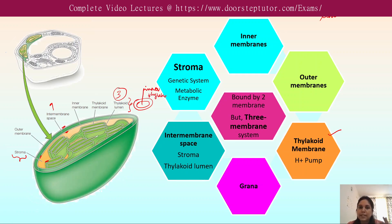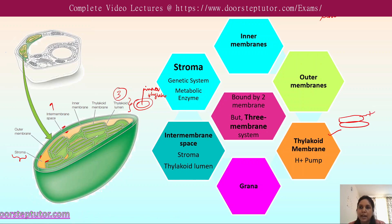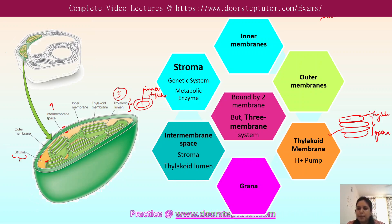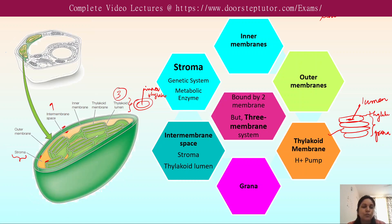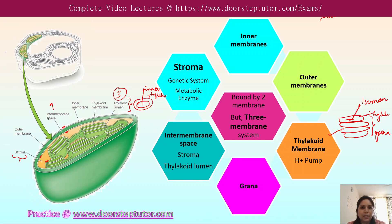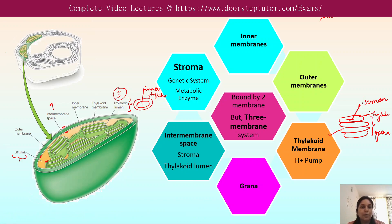What are the thylakoids? Thylakoids form a network of flattened discs, and they are arranged as a stack known as the grana. The thylakoid lumen is the space inside the thylakoid membrane. The stroma is one of the important components of the chloroplast because the genetic system, all the metabolic enzymes for photosynthesis, and other metabolic reactions take place in the stroma. The intermembrane space is composed of the outer membrane.